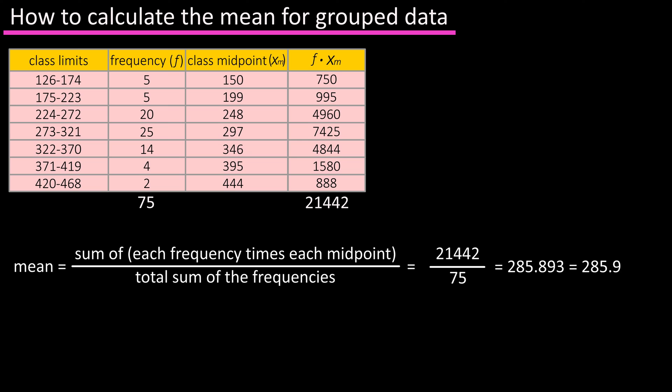The formula that is often used for this process is usually written as x bar equals sum of the midpoints of the classes times the frequencies of the classes divided by the total number of frequencies. This symbol is the Greek letter sigma, and in mathematics it means sum of, and the x bar represents the mean.